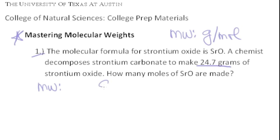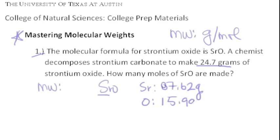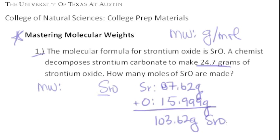Strontium oxide is a heterodiatomic molecule, so we need to find the molecular weight for strontium, which is 87.62 grams per mole. Oxygen is 15.999 grams per mole. When you add that up, you have 103.62 grams per mole for strontium oxide.